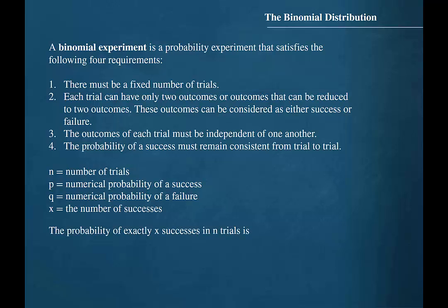The formula for the probability of exactly X successes in N trials is: P(X) = N factorial divided by (N minus X) factorial times X factorial, multiplied by P raised to the X times Q raised to the N minus X.